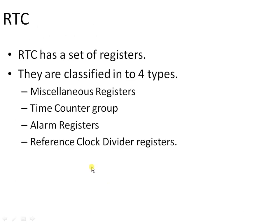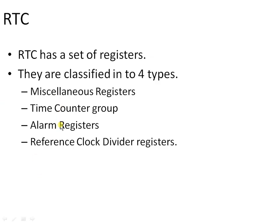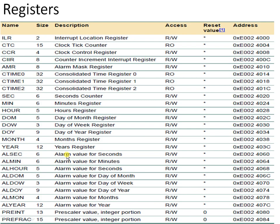RTC is nothing but a set of registers. These registers are classified into four types: miscellaneous registers, time counter registers, alarm registers, and reference clock divider registers. We will see each and every set of registers. All these registers need to be accessed based on our requirement when using the RTC. These registers are classified into those four types, and we will now go through each set.